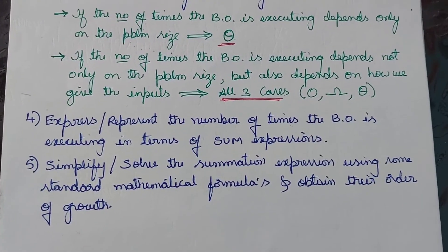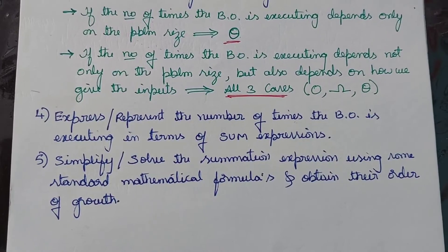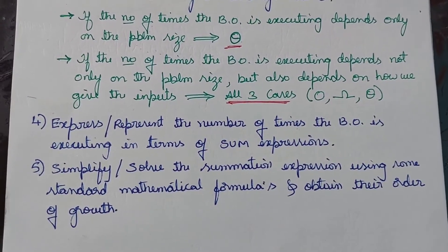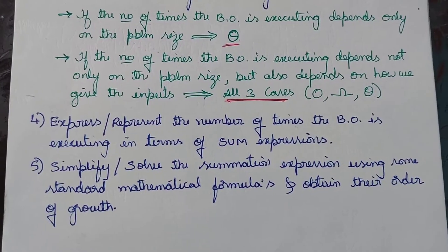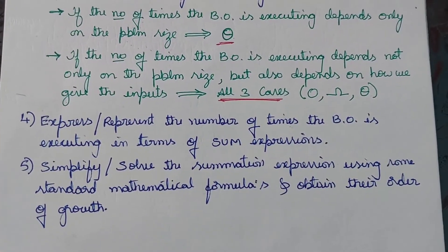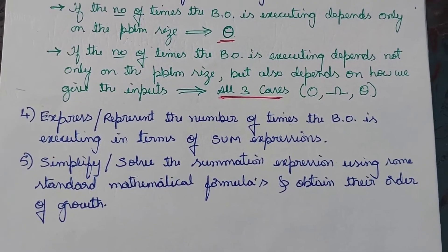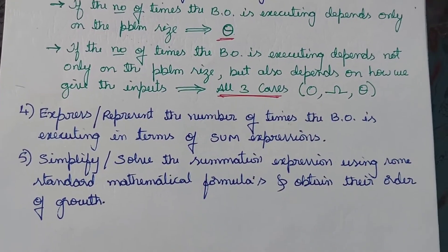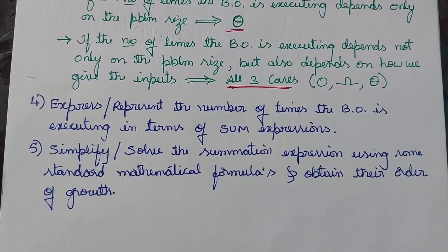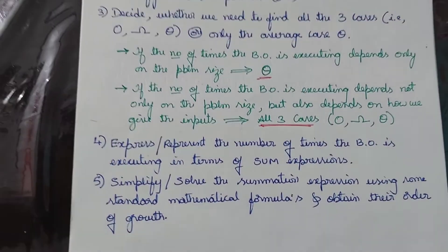Finally, the fifth step is to simplify or solve the summation expression obtained in step four using standard mathematical formulas, and obtain the order of growth. Once we get the order of growth, that will be the time complexity of the algorithm.